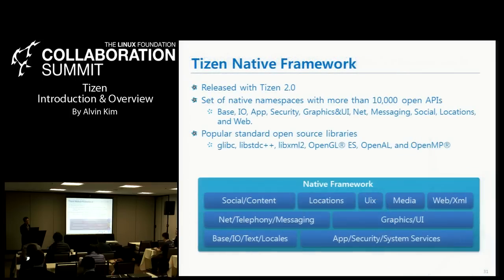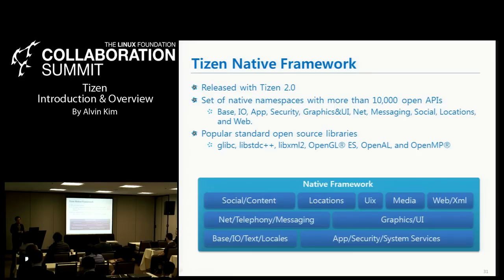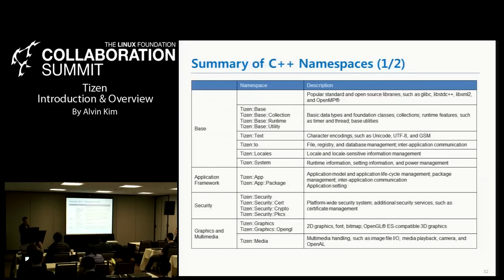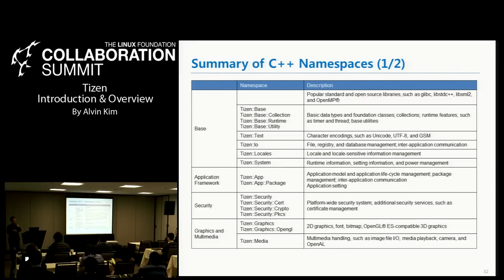This is the platform features of the native framework. Tizen native framework, released with Tizen 2.0, provides many sets of C++ namespaces with more than 10,000 open APIs — like base, IO, and others shown in the next slide. Along with these C++ proprietary APIs, we are also providing popular standard open source libraries like glibc, libstdc++, libxml, OpenGL ES, OpenAL, and OpenMP. This is quite an improvement from the existing Bada API. It is a proprietary API designed by ourselves from the Bada platform.